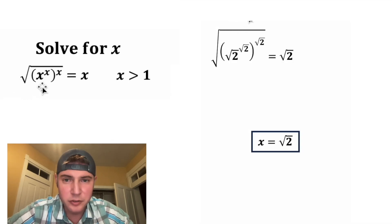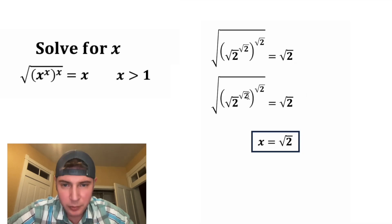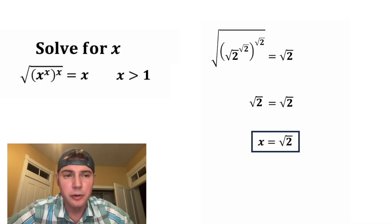We're going to plug in the square root of 2 for each of these x's. And then we're going to multiply these exponents. Square root of 2 times square root of 2 is equal to 2. And then this square root and this square cancel each other out. And then we end up with square root of 2 equals square root of 2.